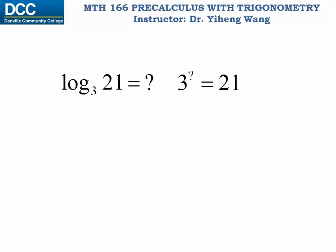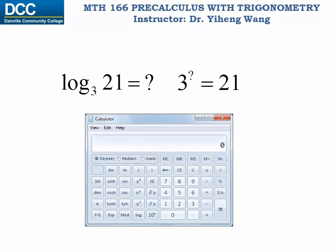And if you try to use your calculator to help you, most scientific calculators do not allow you to directly evaluate a logarithmic expression with an arbitrary base. Most likely your calculator only allows you to evaluate directly the common logarithm and the natural logarithm — in other words, logarithmic expressions with the base of 10 or natural base number e. So what do you do in this case?